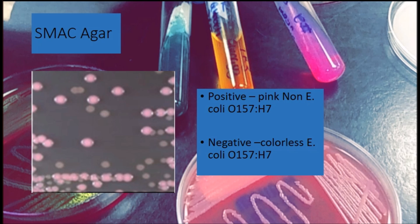Next we have the SMAC agar plate, or Sorbitol MacConkey agar — it's like an upgrade used for the detection of E. coli O157:H7. It's also a great test for differentiating E. coli species. The positive result is pink and the negatives are colorless.